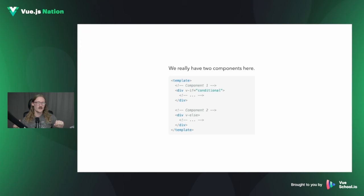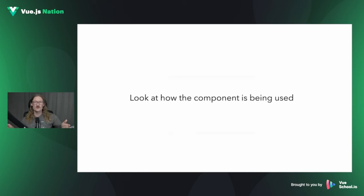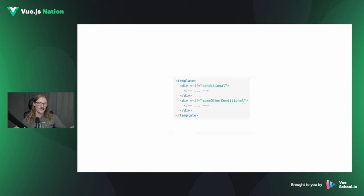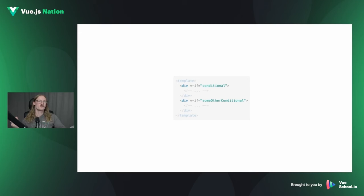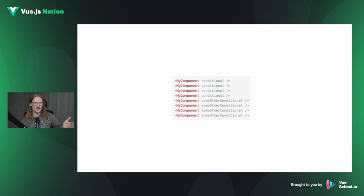Since the two branches of a v-if are independent pieces of functionality, nothing stops us from splitting them into two separate components — they don't need to live within the same component or the same file. That's the general idea of the hidden components pattern: we tease apart different subsets of functionality. Looking at code is one approach, but the easiest way to find these subsets is actually to look at how the component is being used elsewhere in our application.